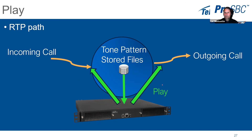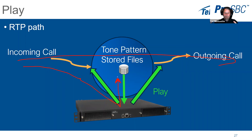For DTMF detection: when a digit is detected before the call is answered, it is sent to the routing script. Digits normally pass through from incoming to outgoing leg transparently. If you want to detect them before routing, the routing script captures those digits and you can decide what to do with them, since routing scripts support a configurable language.